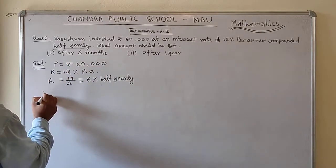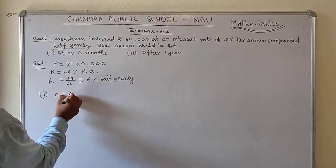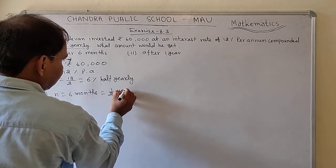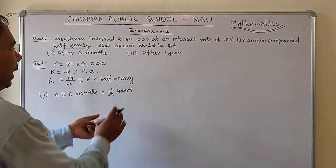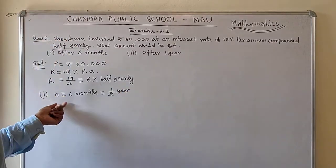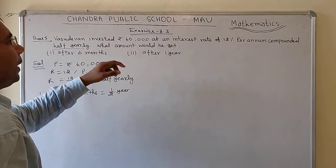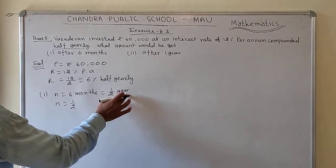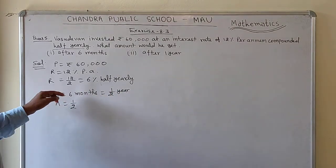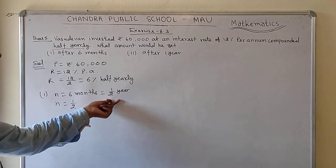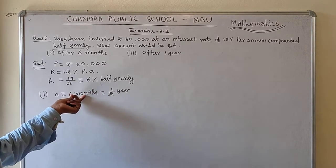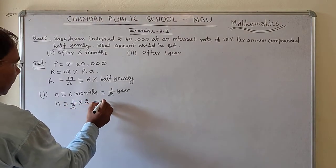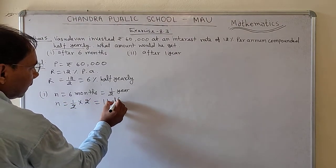Now in the first case, the time N = 6 months, which is equal to half a year. Whatever the time is, it should be expressed in years first. So 6 months = half year, and then half year multiplied by 2 gives N = 1 half-year period.